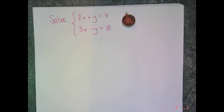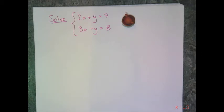Now let's see how this elimination method works. It doesn't use substitution. All it uses is the properties of equality — addition, subtraction, multiplication, and division. And it has the same premise: you're going to combine the two equations into one equation in one variable.